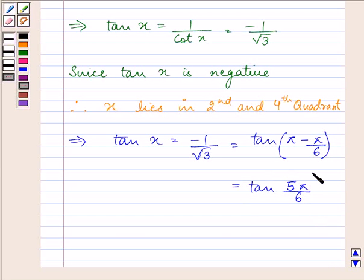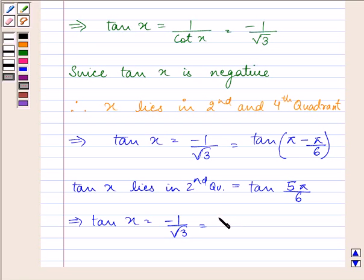We need to find the value in the fourth quadrant also. So tan x equals minus 1 by root 3 from the fourth quadrant.